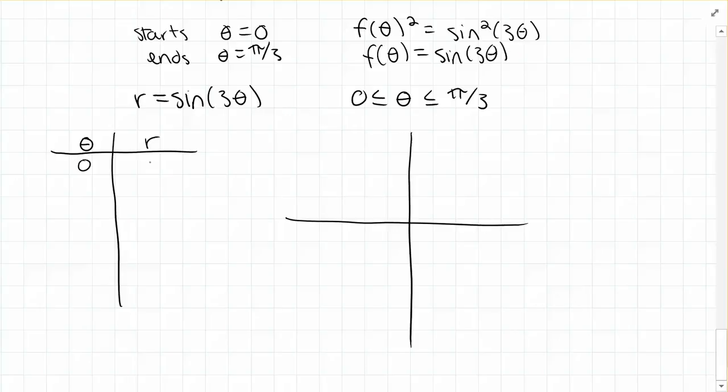If we plug in theta is pi over 12, then sine of 3 times pi over 12 is sine of pi over 4, which is root 2 over 2.